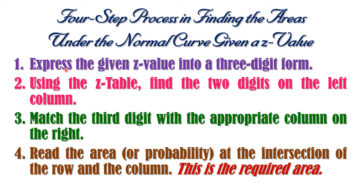First, express the given z-value into a three-digit form. After that, use the z-table and find the two digits on the left column. Then match the third digit with the appropriate column on the right. Lastly, read the area or probability at the intersection of the row and the column. That is now the required area of the region.